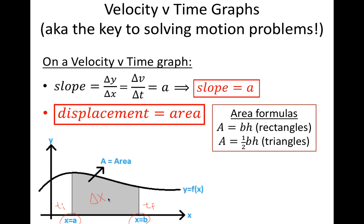Since we're only going to solve problems that involve constant acceleration, and therefore only get velocity versus time graphs that are linear, we're only going to have to find areas for rectangles and for triangles. Using slopes and areas of graphs is a common analysis tool we'll use throughout the rest of the year. The slope is used to find quantities defined as change in y over change in x, and the area finds quantities defined as the y value times the x value.